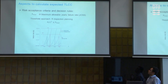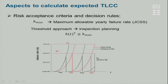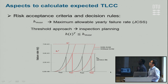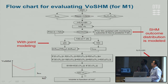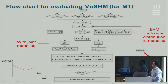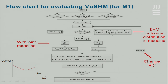For the risk acceptance criteria and decision rules, the maximum acceptable hazard corresponds to the maximum allowable yearly failure rate according to the JCSS model. For inspection planning, we use the threshold approach — the inspection is planned in the year before the threshold value is crossed. Different threshold values will lead to different inspection plans. To summarize in the flowchart: with joint modeling, the hazard function can be derived; with the SHM outcome distribution modeled, the structural state can be updated, leading to calculation of the value of SHM as a function of this hazard function.